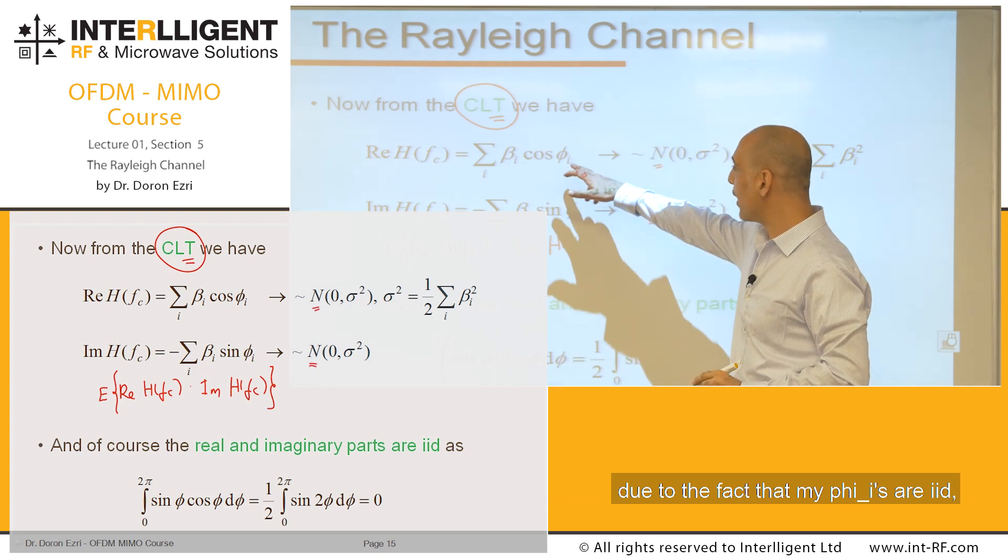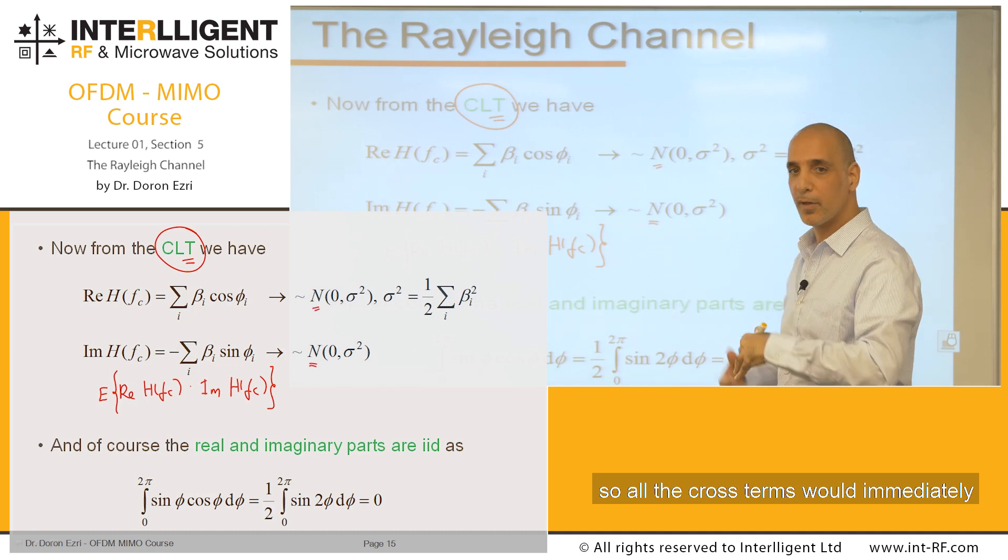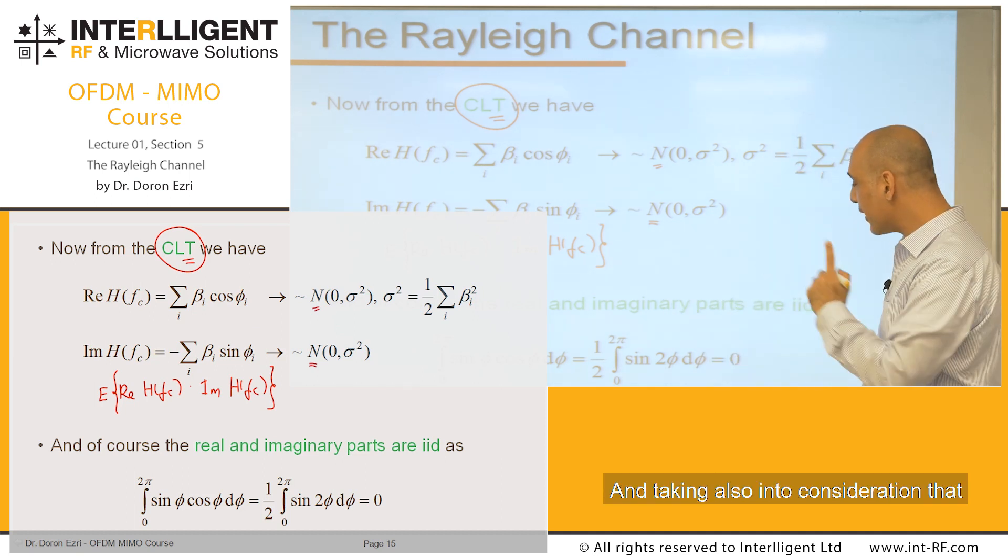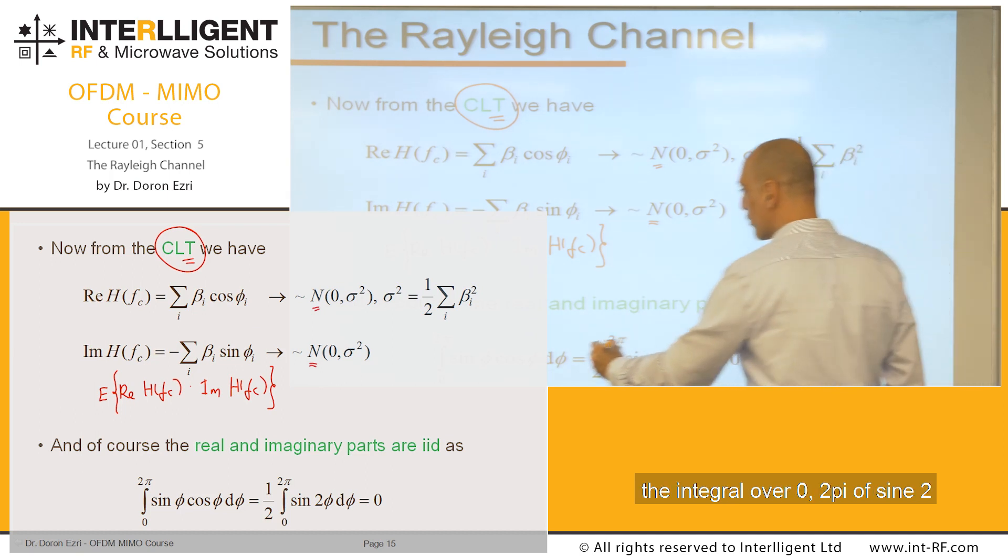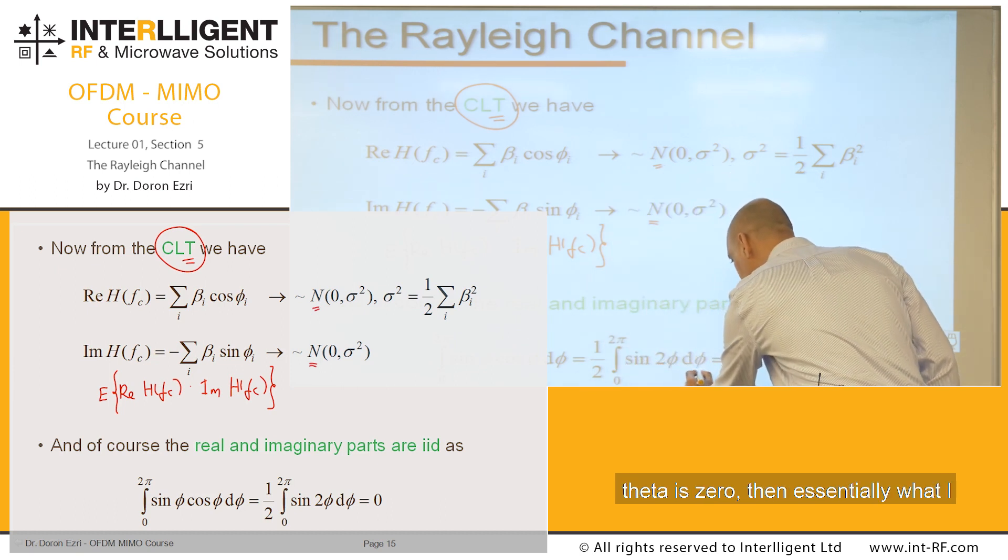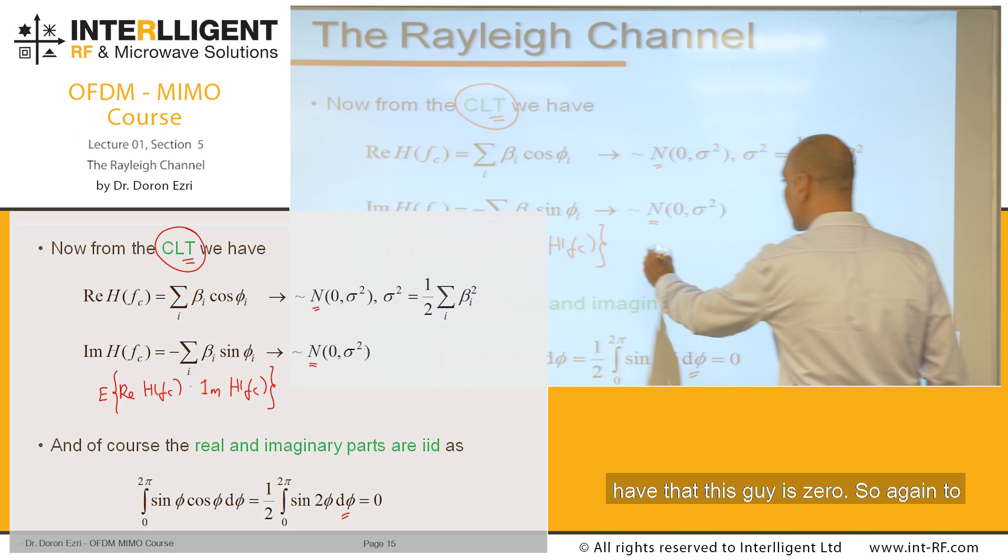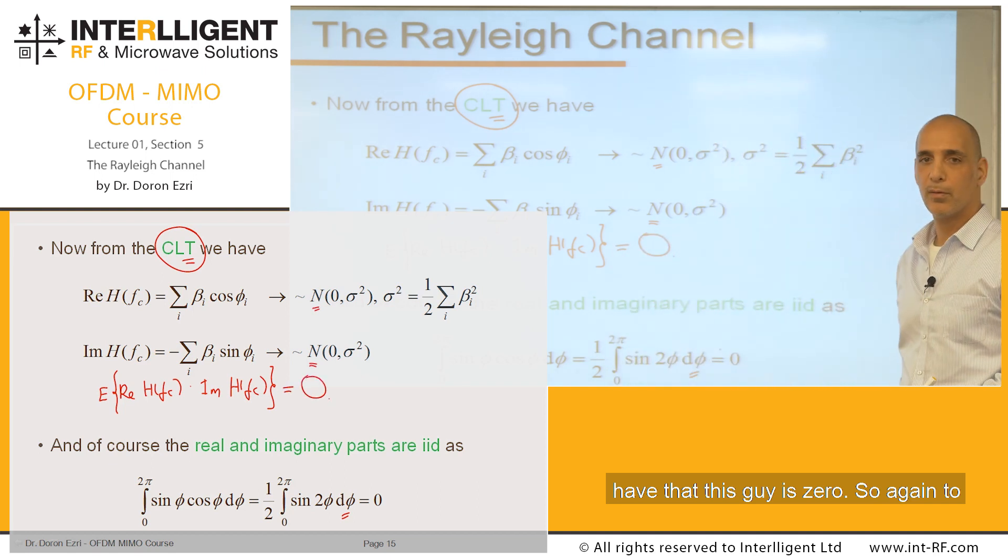Due to the fact that my phi_i's are iid, so all the cross terms would immediately be annihilated. And taking also into consideration that the integral over 0 to 2π of sin(2θ) is zero, then essentially what I have is that this guy is zero.